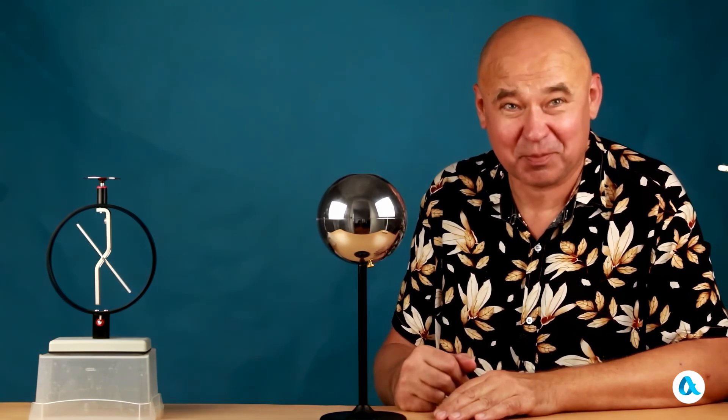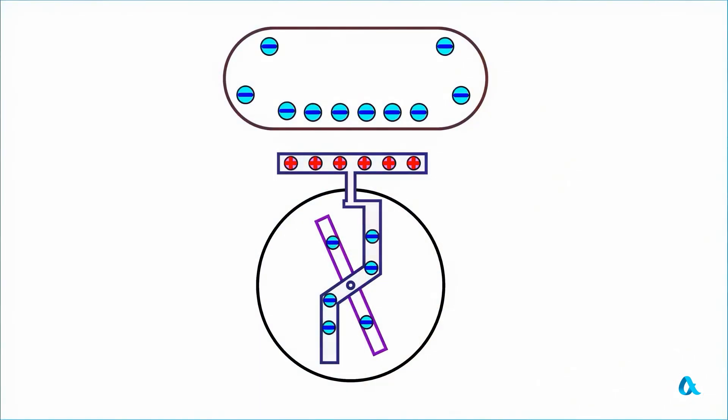The explanation. I will start with the situation we are already familiar with, where the charges on the electroscope redistribute under the influence of an external negative charge, so that the electroscope's plate becomes positively charged, and the clamp with the needle becomes negatively charged. In this case, the total charge of the electroscope, of course, remains equal to zero.